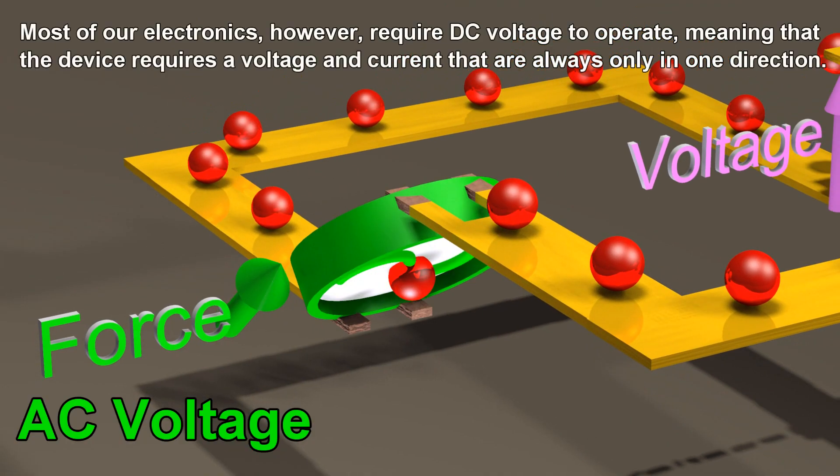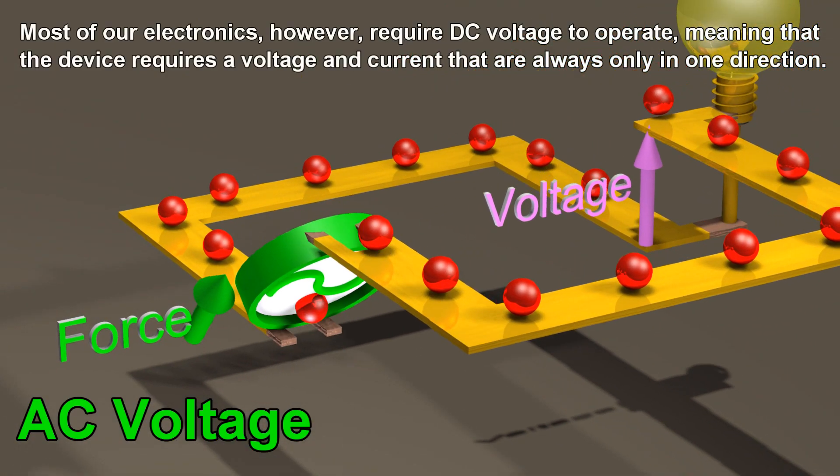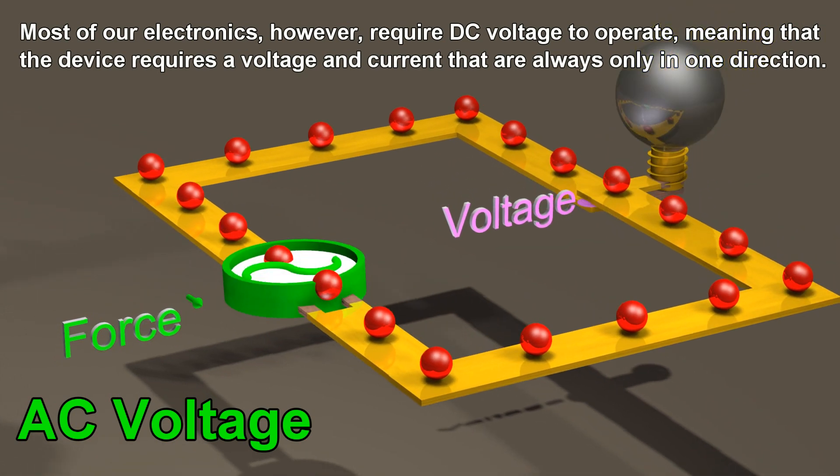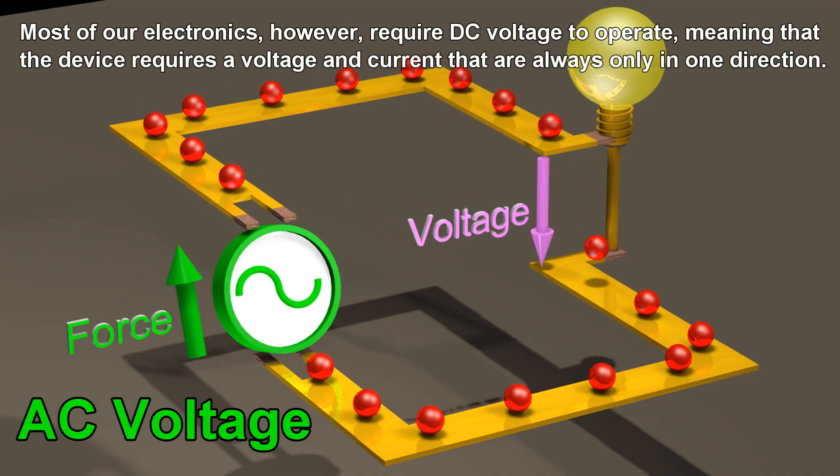Most of our electronics, however, require DC voltage to operate, meaning that the device requires a voltage and current that are always only in one direction.